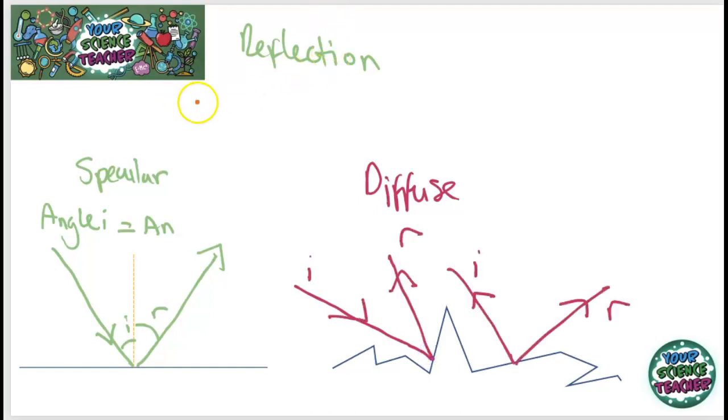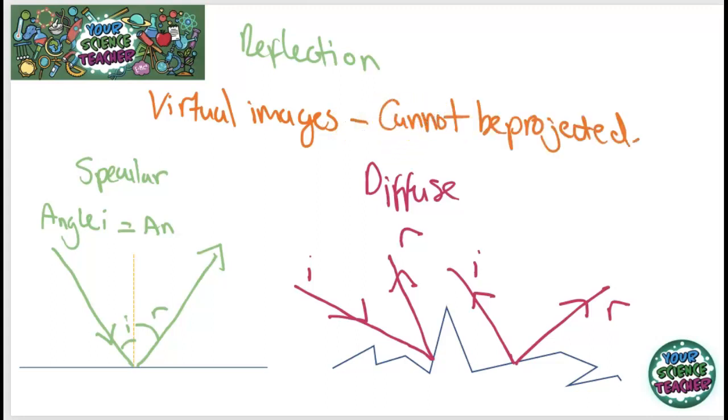Now, the images caused from reflection are called virtual images. The reason they're called virtual images is because they cannot be projected onto a screen. Just think about it. If you look into a mirror, that is not going to be able to be put onto a piece of paper. That's how I like to think of virtual images: if I hold a piece of paper there, will the image show up on that piece of paper?